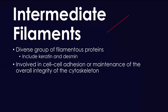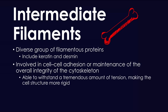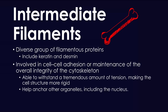I always consider intermediate filaments to be like the long bones in our body. Why? Because I consider them to be very strong and allow our cells to maintain their structure and overall integrity — that's exactly what the long bones do. Those are very strong bones; they're powerful, and they're able to resist a lot of tension, allowing us to maintain our structural support.